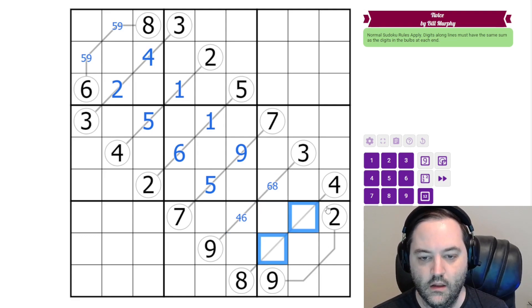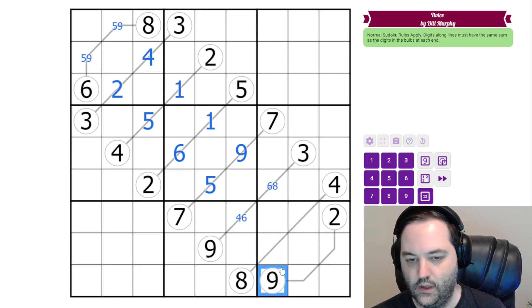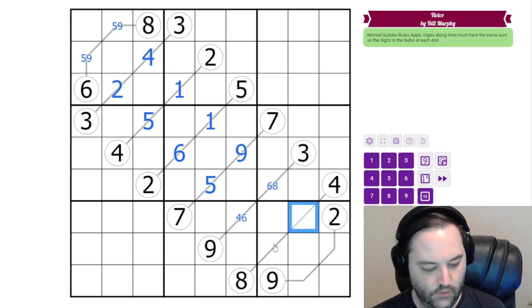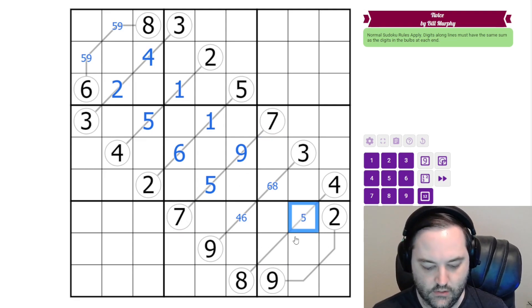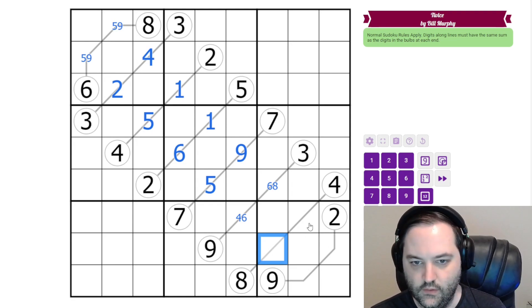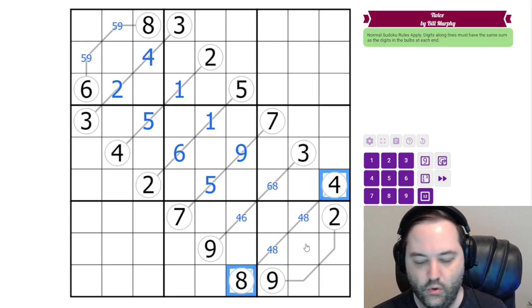Here we have twelve again and this time we can't have two sixes. We can't have three nine because of the nine in the box. We can't have seven because there are actually two sevens looking. So this has to be four eight again in some order.